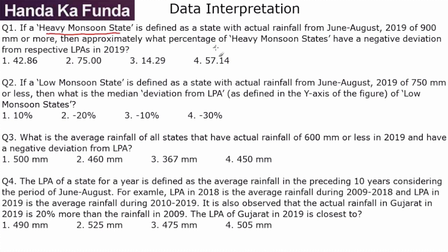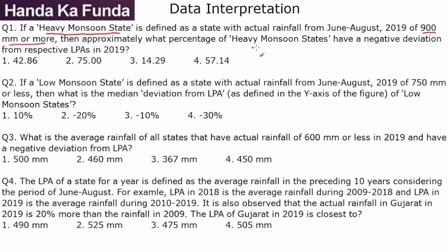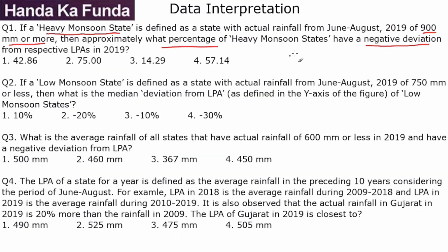Question 1: A heavy monsoon state is defined as a state with actual rainfall from June to August 2019 of 900 mm or more. So I need to look at states on the right side of the 900 mm line. Then, how many of them have a negative deviation? On the positive side: Maharashtra, Sikkim, Mizoram, Goa — that's 4. On the negative side: Arunachal Pradesh, Kerala, and Meghalaya — that's 3. So there are 7 heavy monsoon states total, and 3 out of 7 have a negative deviation. 3 divided by 7 is 42.86% — a simple, straightforward answer done in less than a couple of minutes.